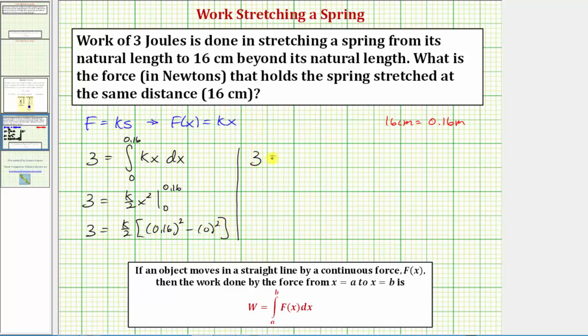So we have the equation three equals, well here we're going to have k times, and then we'd have one-half times 0.16 squared. That comes out to eight all over 625.